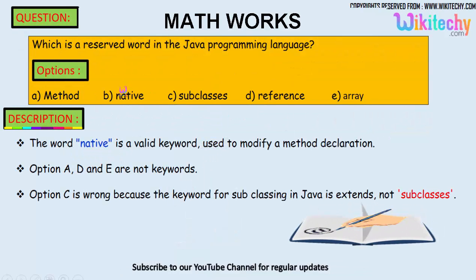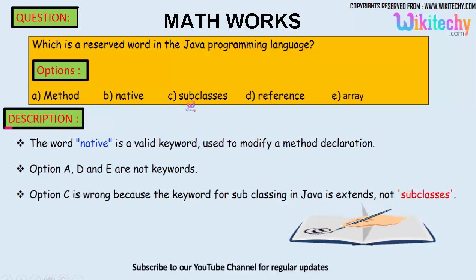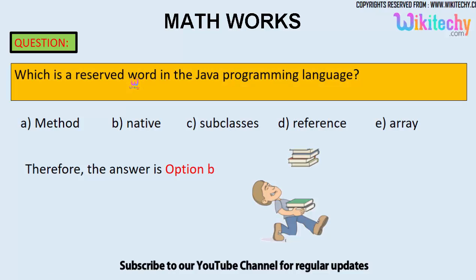The word 'native' is a valid keyword used to modify a method declaration. 'Method' is not a reserved word. 'Reference' and 'array' are not reserved words or keywords. Option C is wrong because in Java they use 'extends' and not 'subclasses'. So the answer is option B — 'native' is a reserved word in the Java programming language.